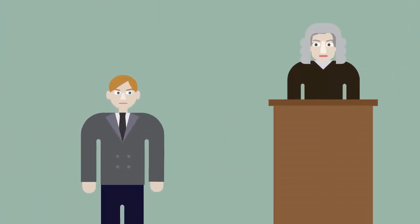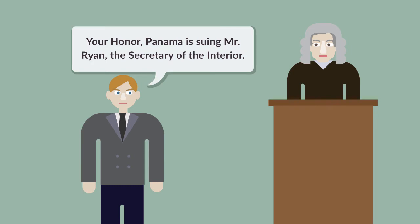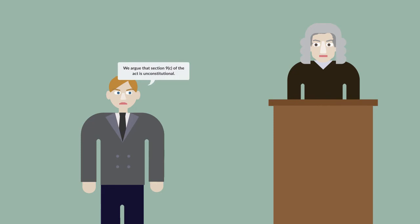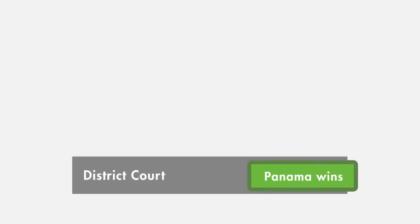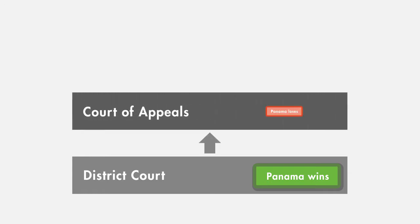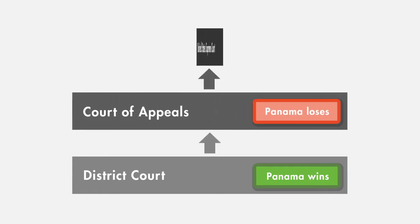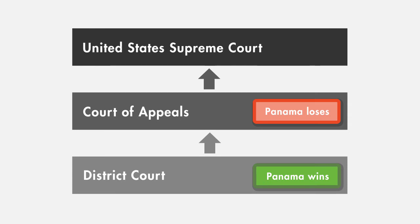The Panama Refining Company, which we'll call Panama for short, wanted to ship and sell more oil than the Roosevelt administration allowed. Panama sued Ryan, the Secretary of the Interior, in federal court to block enforcement of the quotas. Panama claimed that Section 9C of the Act unconstitutionally delegated legislative power to the executive branch. The District Court granted Panama an injunction against enforcement of the administration's quotas, but the Court of Appeals for the Fifth Circuit reversed. Panama sought review in the United States Supreme Court.